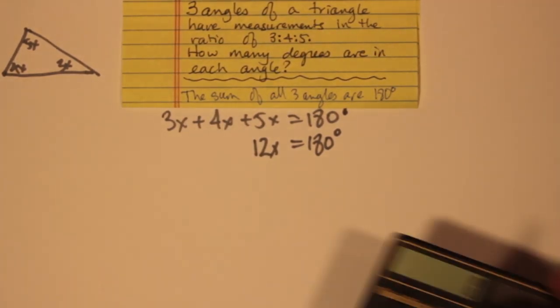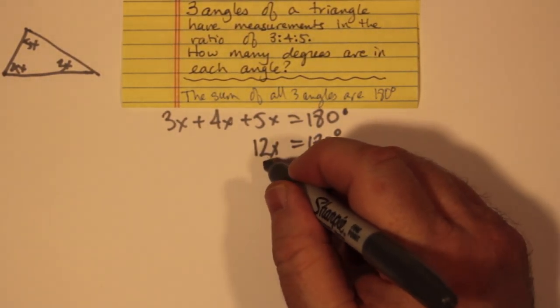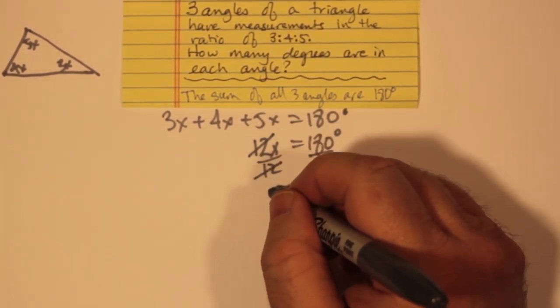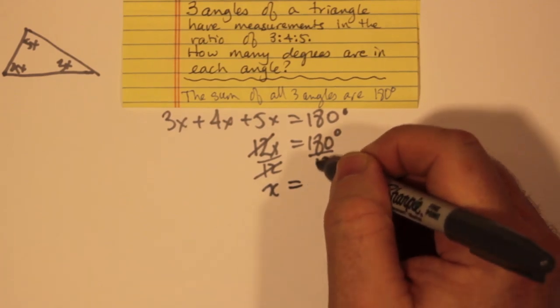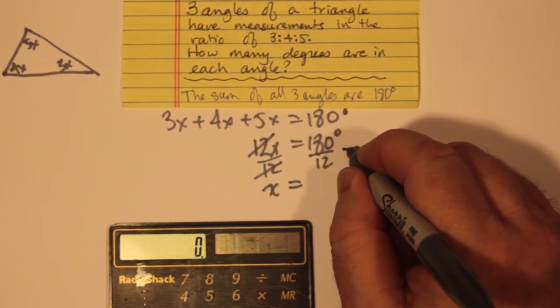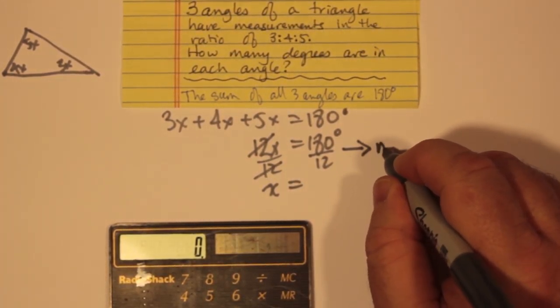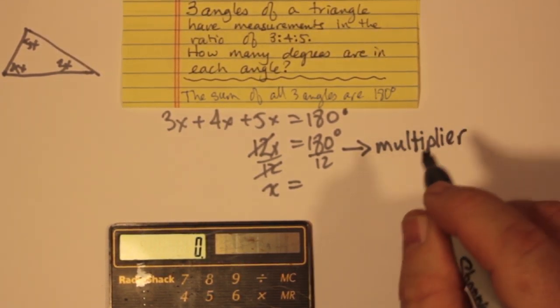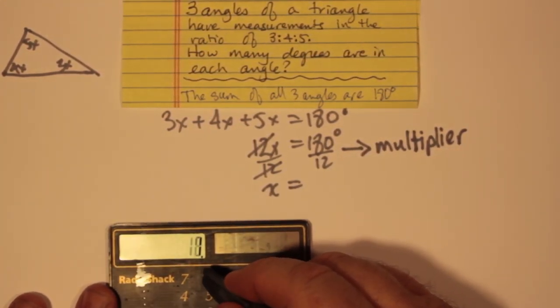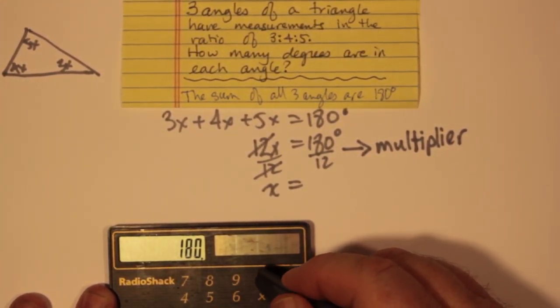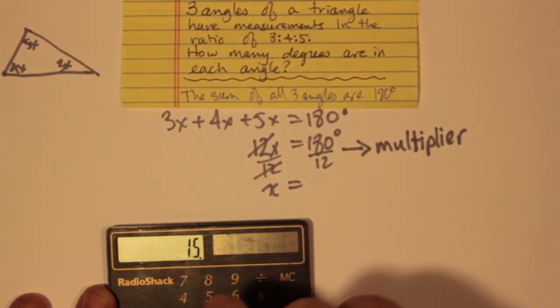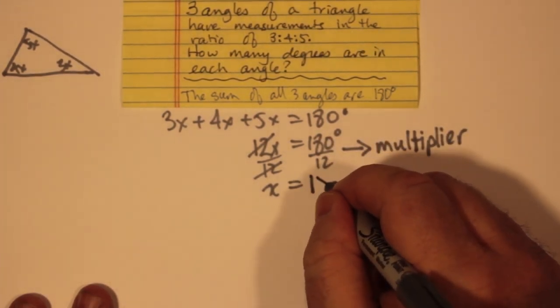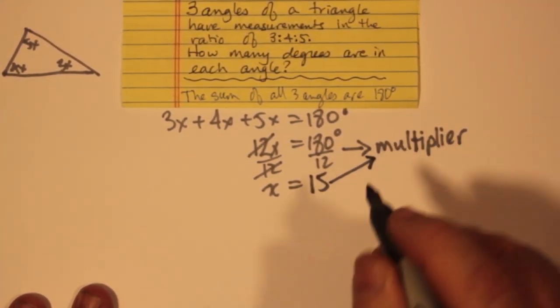Now, if we divide both sides by 12, these 12s cancel, and x is all alone by itself. We get 180 divided by 12. And what's that going to give us? That's going to give us our multiplier. So 180 divided by 12 gives us 15. 15 is our multiplier.